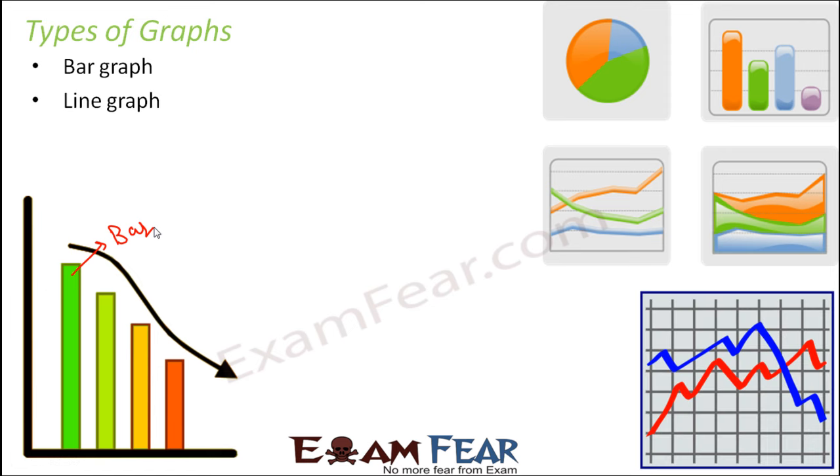The next type of graph is a line graph, where you first jot down the points and then join the points to make lines. Looking at the lines—whether growing, declining, or remaining constant—you can interpret the graph by observing the pattern.